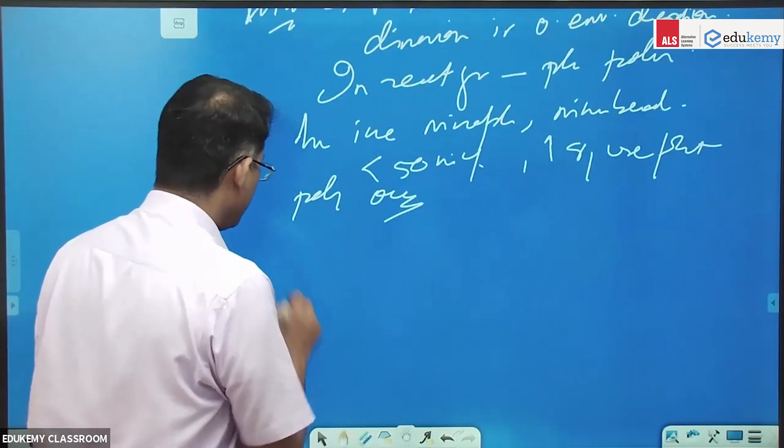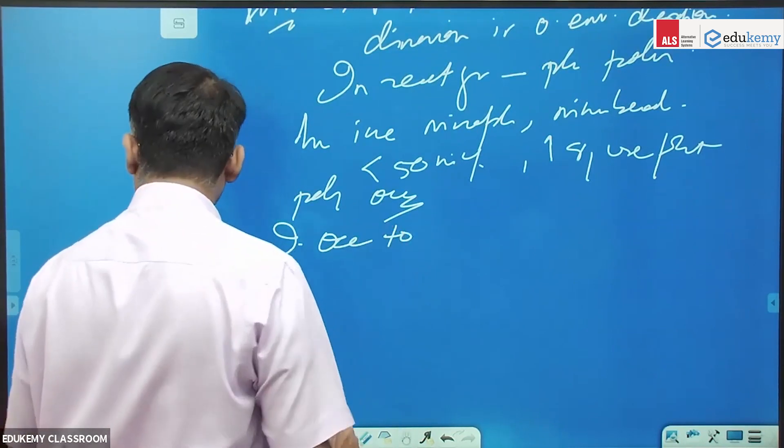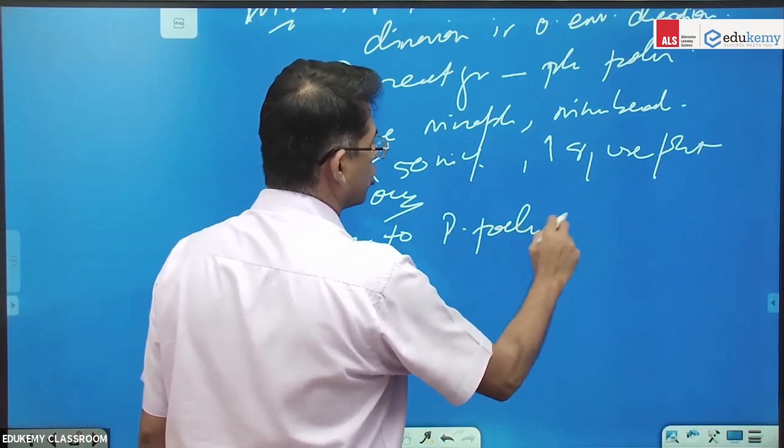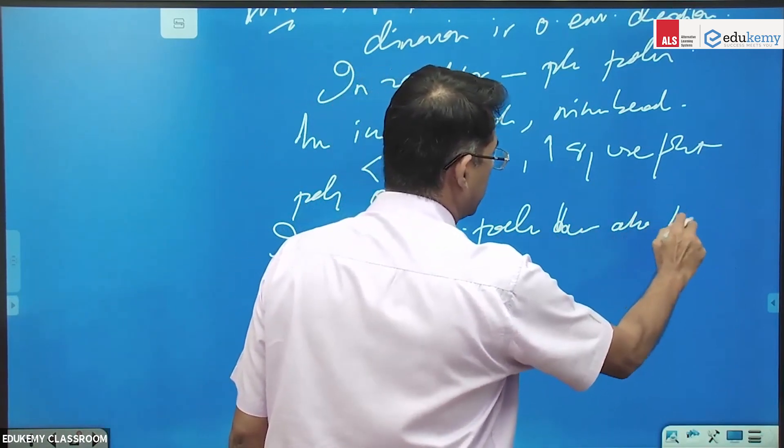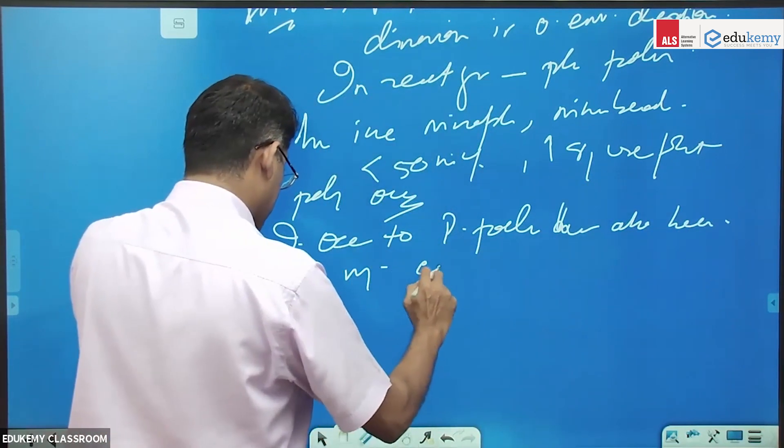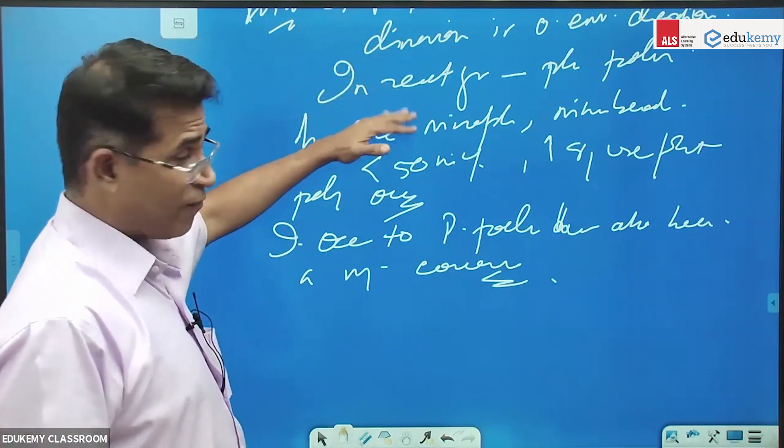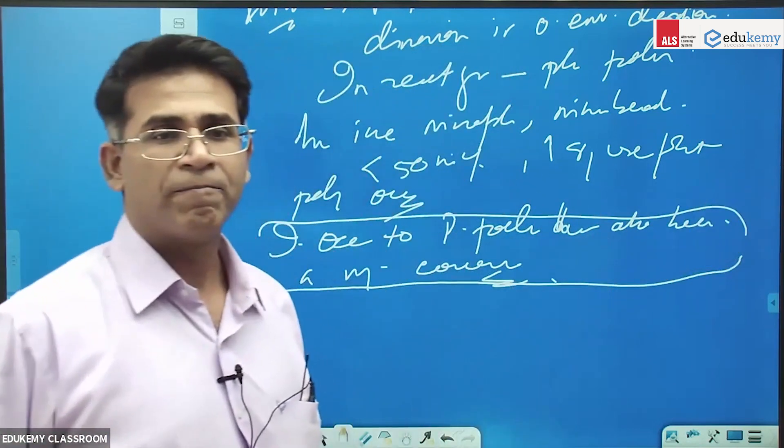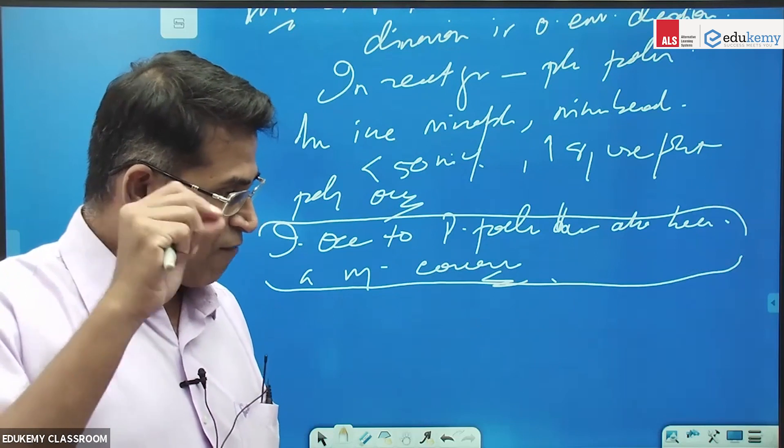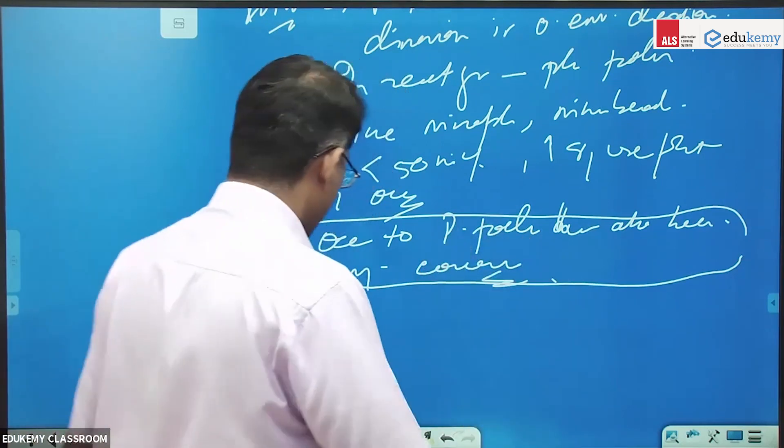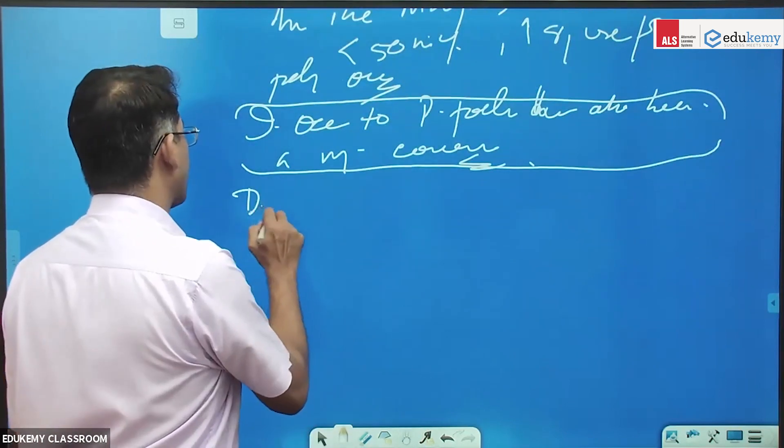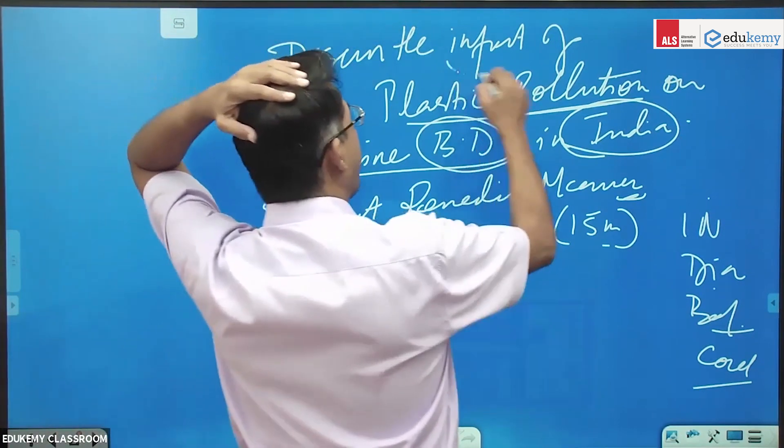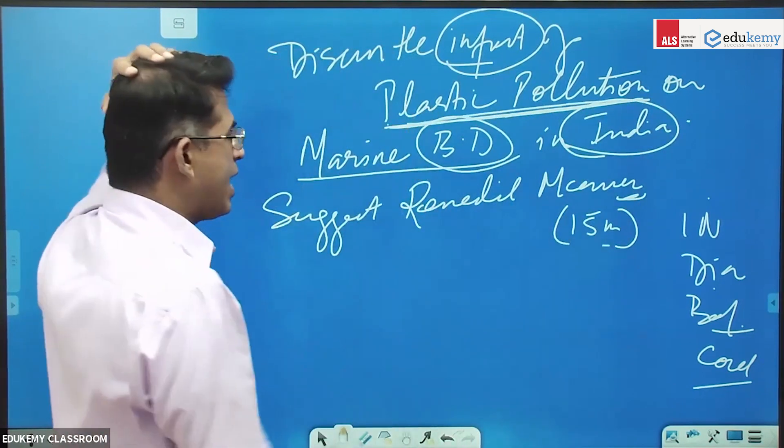Indian Ocean, because see, talk about India - so Indian Ocean plastic pollution has also been a major concern. That's all - what is plastic pollution, if you know more details, otherwise Indian Ocean has also been an important concern. Now you tell me, if I'm talking about plastic pollution, in the diagram what do you want to add?